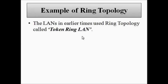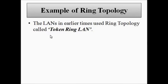An example of ring topology is the token ring LAN — the token ring system local area network. This is one of the LANs that was used in earlier times and it used the concept of ring topology. We will discuss the token ring LAN in detail in a separate video. This is an example of ring topology where a token system is used for the communication process.